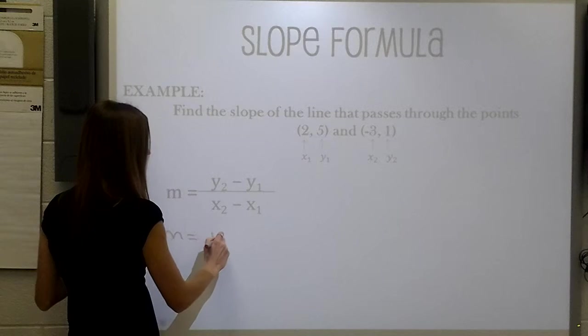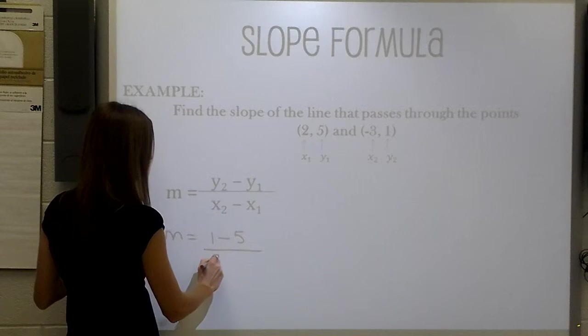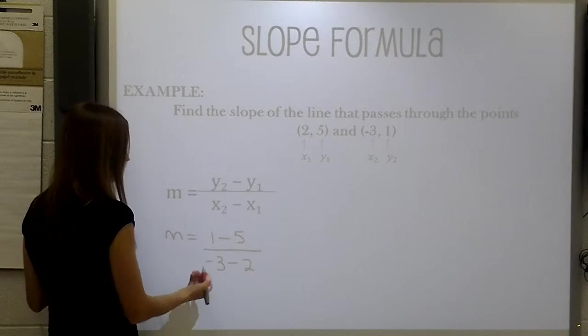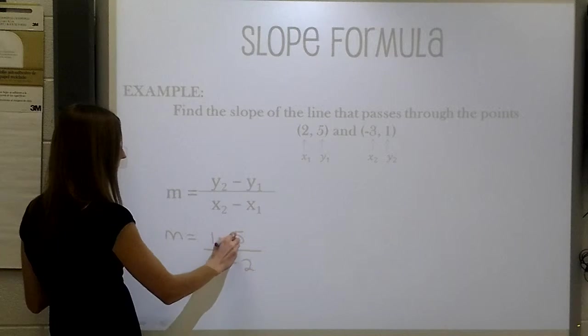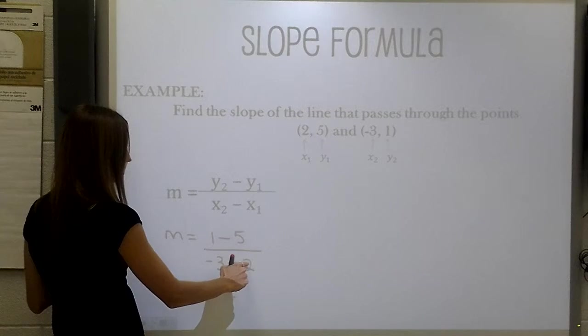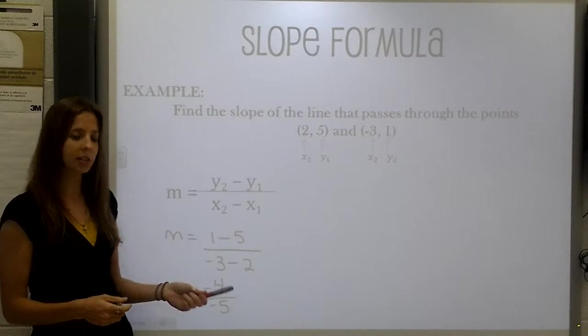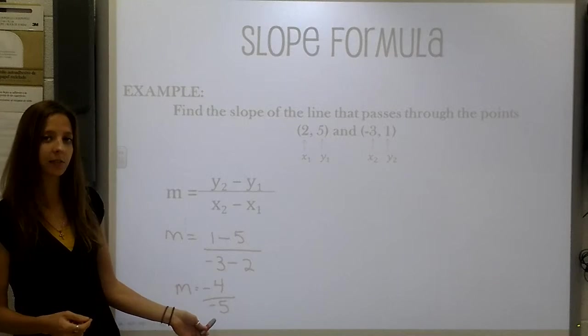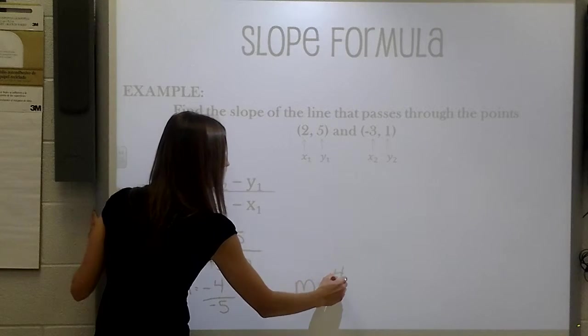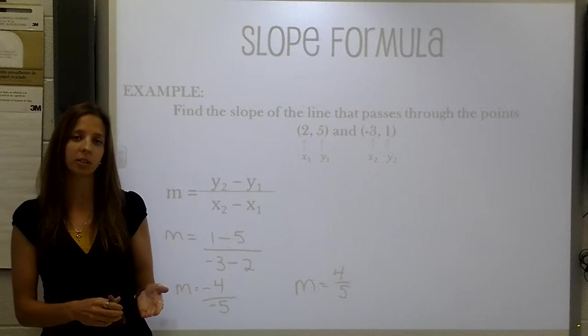y2 is 1 minus y1 is 5. We are going to put that over x2, which is negative 3, subtract it from x1, which is 2. Now we can go ahead and solve for this. 1 minus 5 is a negative 4. And negative 3 minus 2 is going to be a negative 5. The rules of integers and divisions says that if we have a negative divided by a negative, our answer will actually be positive. Therefore, our slope is going to be 4 fifths. And that means that we know that our line is moving in a positive direction upward.